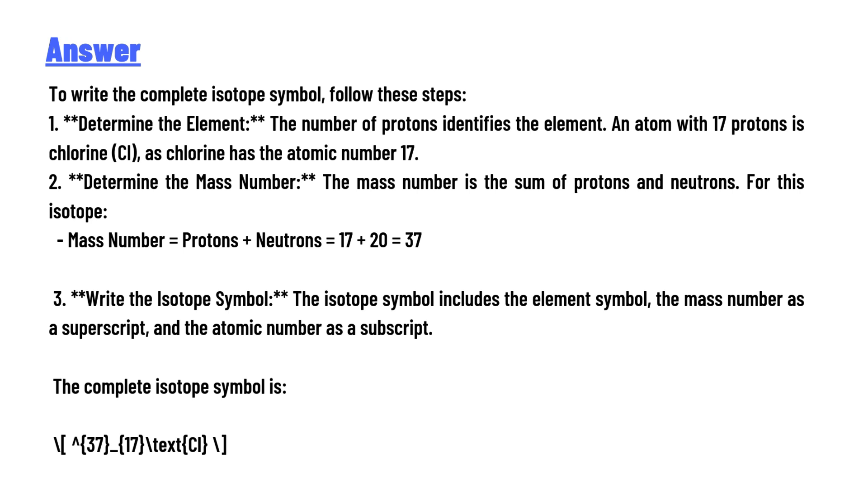The answer to the question is: to write the complete isotope symbol, follow these steps. One, determine the element. The number of protons identifies the element. An atom with 17 protons is chlorine, as chlorine has atomic number 17.